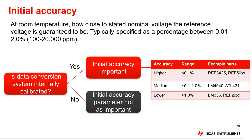The table on the right provides a guideline to understand the magnitude of the error. For example, an error of less than 0.1% is typically thought of as a high-accuracy device, whereas a 1% error is a lower-accuracy device.